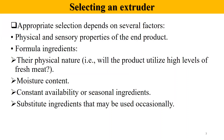The next factor is formula ingredients and their physical nature. The ingredients used in the feeding section have very important physical properties. For example, will the product utilize high levels of fresh meat? What is the protein content, starch content, or carbohydrates involved? The physical properties of formula ingredients are very important.